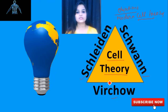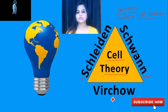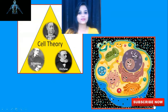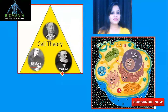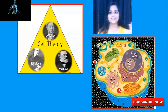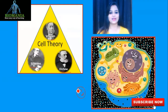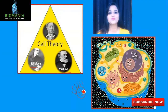Cell theory was given by three great scientists: Schleiden, Schwann, and Virchow. Let me show you their pictures. Here is Schwann, here is Schleiden, and here is Virchow. And here is a happy cell — look at the nucleus, mitochondria, Golgi body, endoplasmic reticulum — everyone is smiling! After watching this video, you will also smile like this. Now let's move towards the points they have given, which are actually very important.